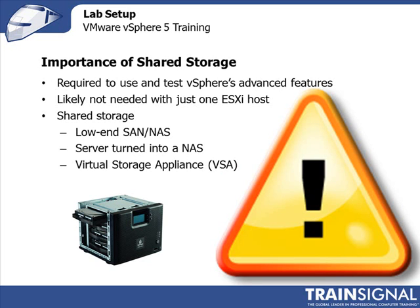Shared storage may not be needed with just one single ESXi server, but once you have more than one ESXi host and you want to play with some of these advanced features, you'll find that you need some shared storage. The different options available include: first off, you could get a low-end SAN or NAS, kind of like the little iOmega iX4 that you see there — that's what I have in my lab. You could also turn a physical server into a NAS by loading something like OpenFiler on it, or you could use a virtual storage appliance, for example running OpenFiler as a virtual machine inside ESXi, or using the new vSphere 5 VSA that turns a minimum of two ESXi servers into a virtual storage area network.